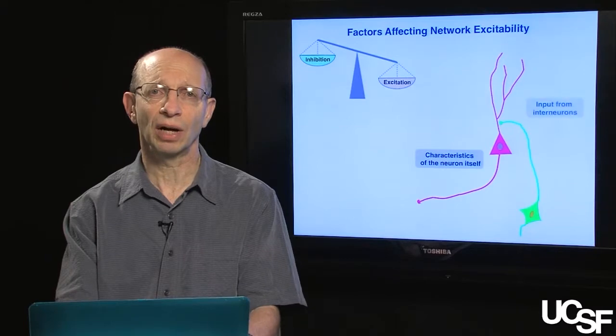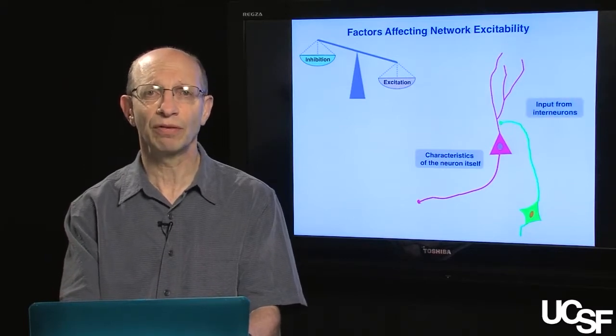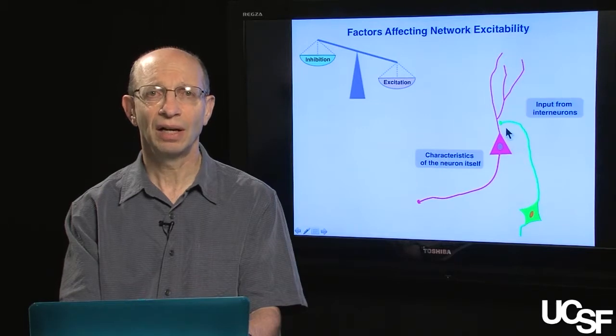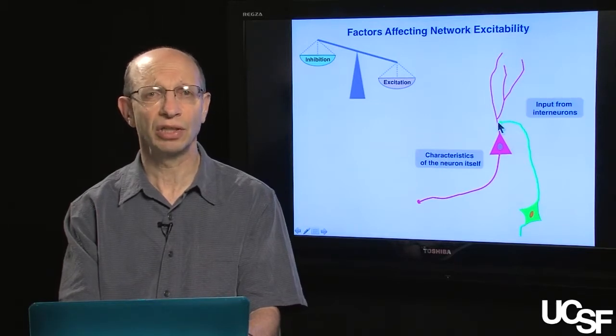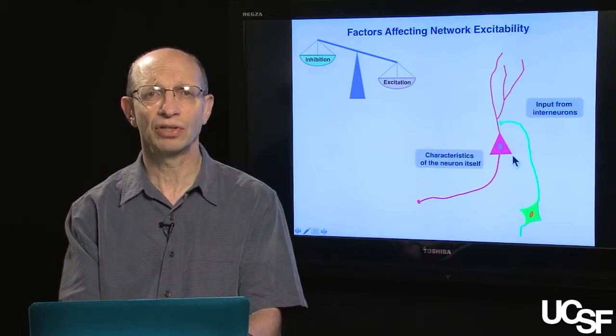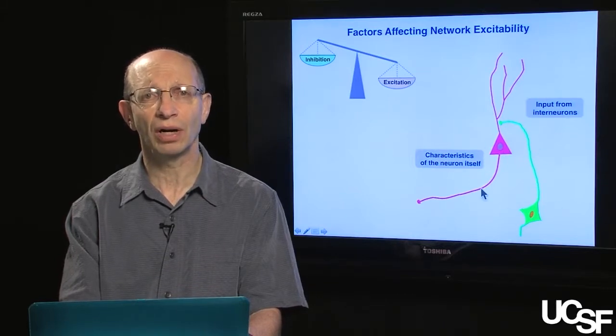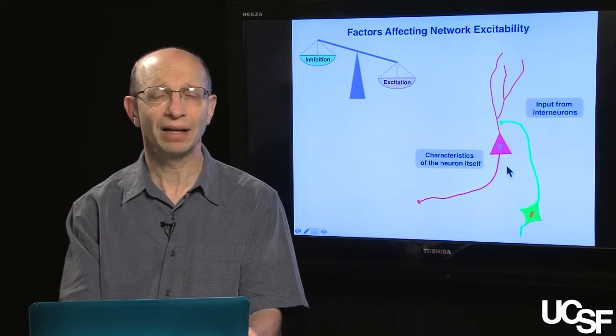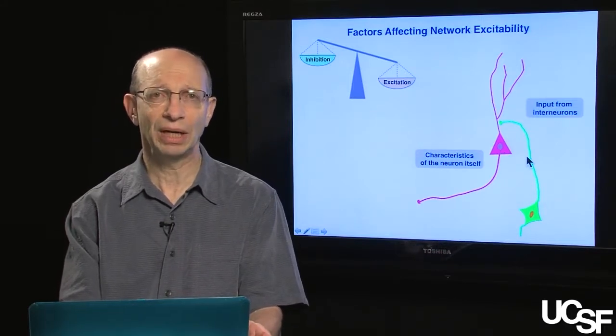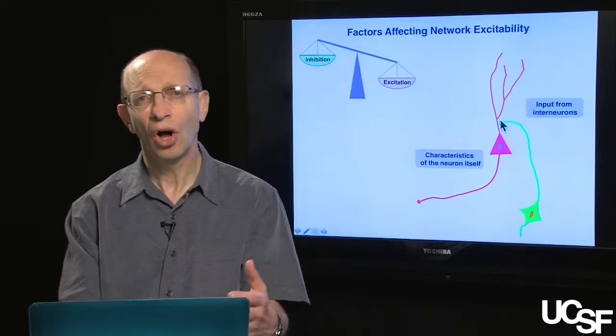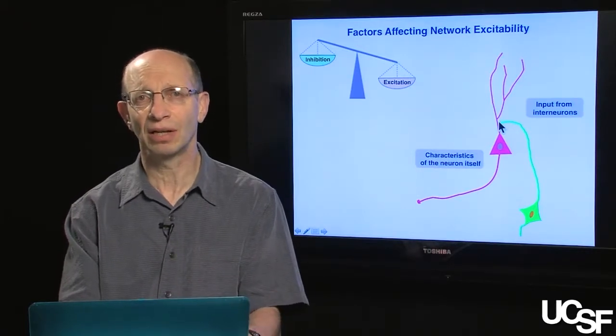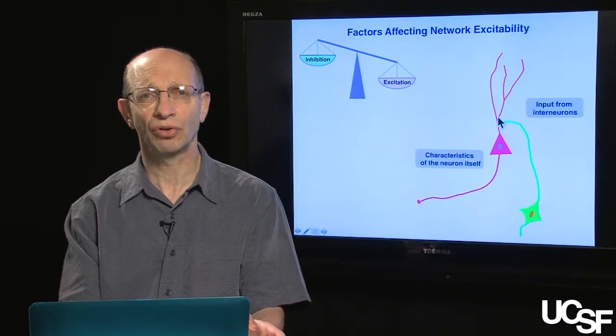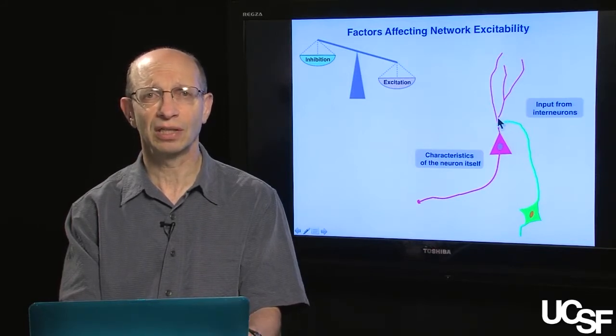That's just the neuron. What about the neuron sitting within its network? Here's a neighboring neuron. Here's input from interneurons. Here's a neuron with its axon synapsing in the proximal dendritic tree of this neuron. How could alterations in the network result in increased excitability of this cell? If you think through this, there are just so many ways this could change. You could alter the amount of release of the excitatory inhibitory neurotransmitter at this dendritic synapse.